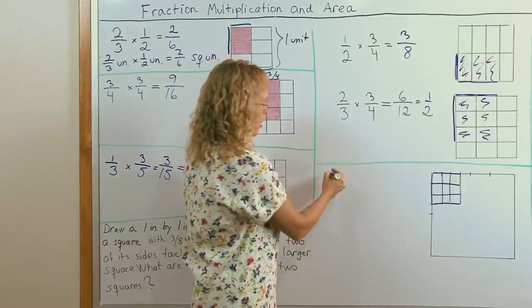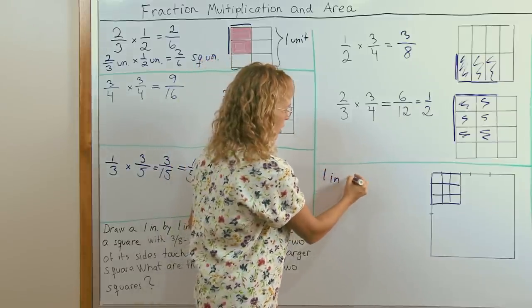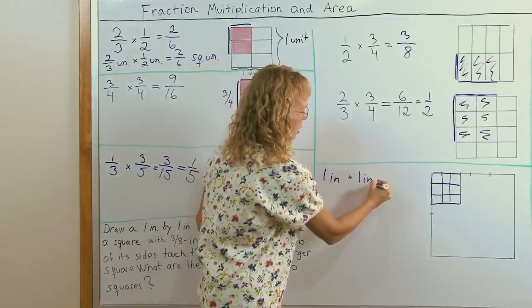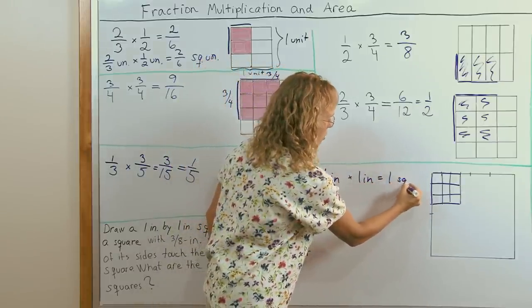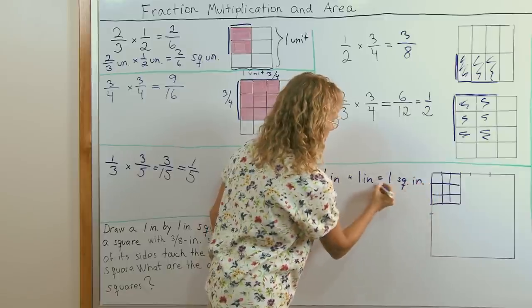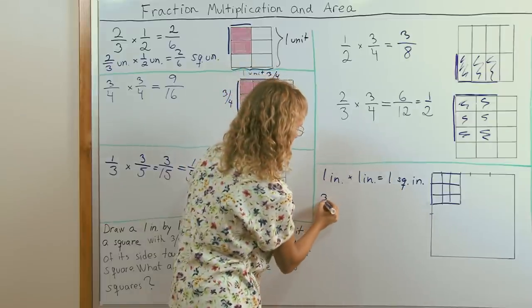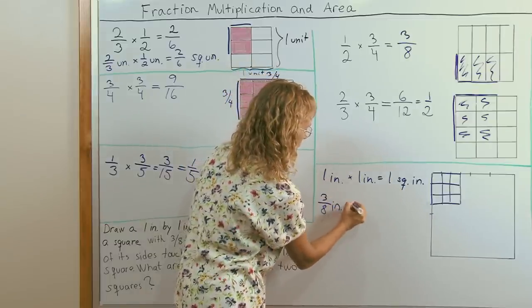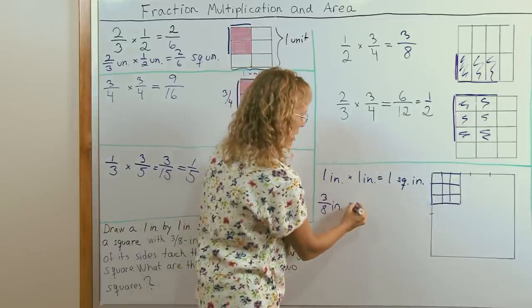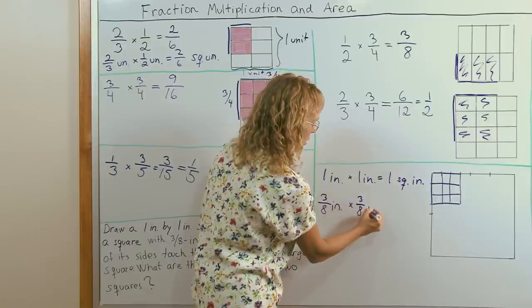Now, the area of the bigger square is one inch times one inch equals one square inch. The area of the smaller square is found by multiplication also. Three eighths of an inch times three eighths of an inch. And we multiply fractions.